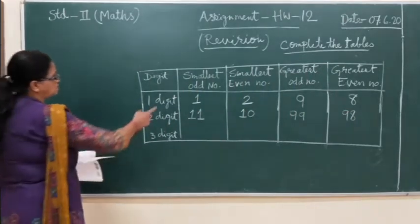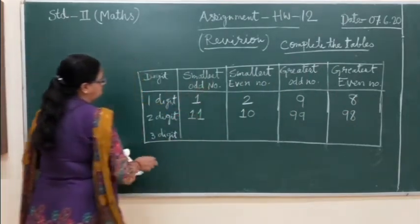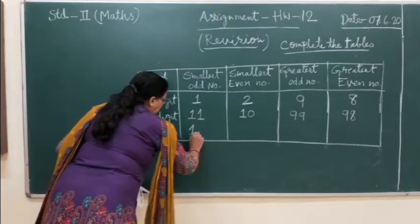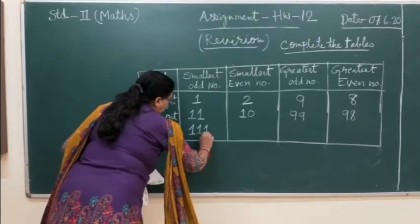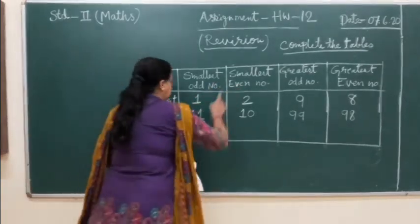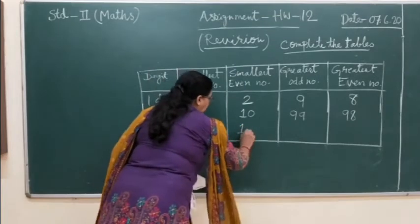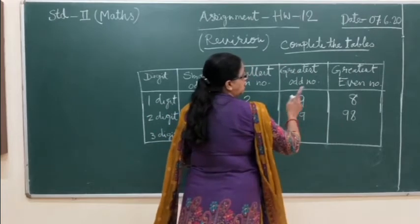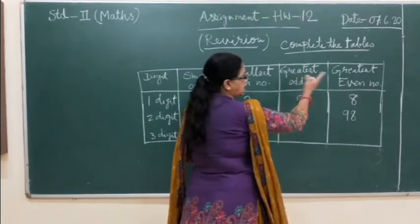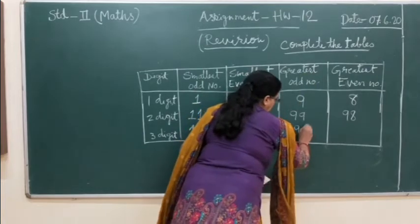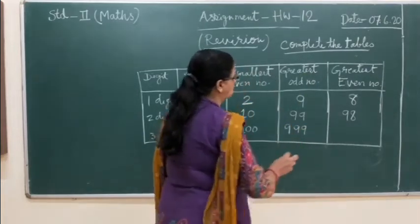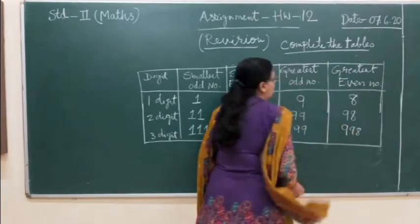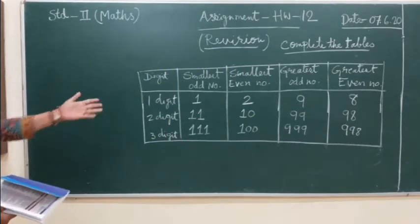Same way for 3 digits. Smallest odd number: 101, because 100 is even. Smallest even number is 100. Greatest odd number: 999. Greatest even number: 998. Hope it is clear and easy. This is how you solve it.